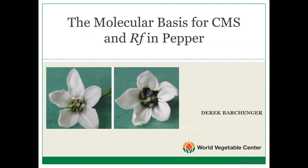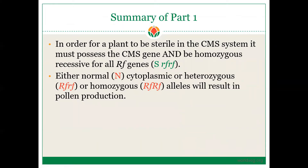We will start out with a summary of part one. In order for a plant to be sterile in the CMS system, it must possess the CMS gene, as well as being homozygous recessive for all RF genes. A sterile line needs to be S, little RF, little RF. Either normal cytoplasm, or heterozygosity or homozygosity at the RF alleles, will result in pollen production.